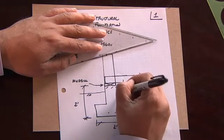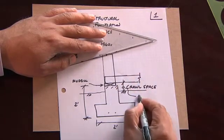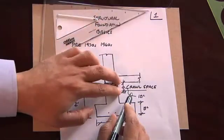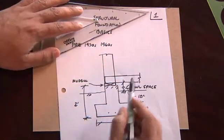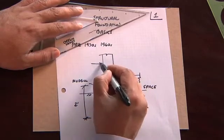This area in here is called the crawl space. And although I didn't draw it to scale here, that is usually a minimum of 18 inches. It's a little bit larger than the way I drew it. And then this is your wall system.